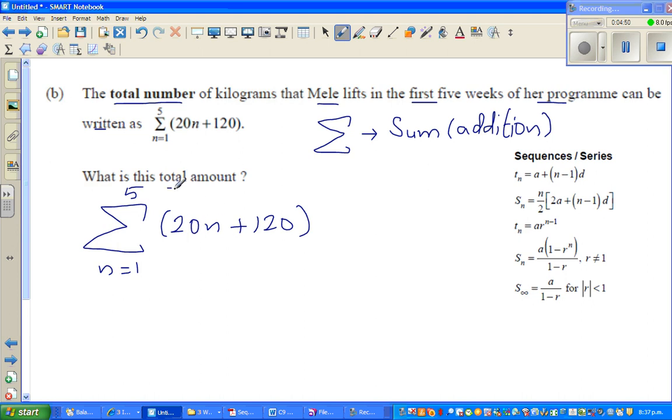This is read like this: sigma n from 1 to 5 of this. Basically what they're asking you to do is what's the total amount, which means you have to plug in or substitute 1 to 5 in place of n. This means I'll put this in brackets, so that's 20 times 1 plus 120, plus sigma is for plus, then you have to put 20 times 2 plus 120.